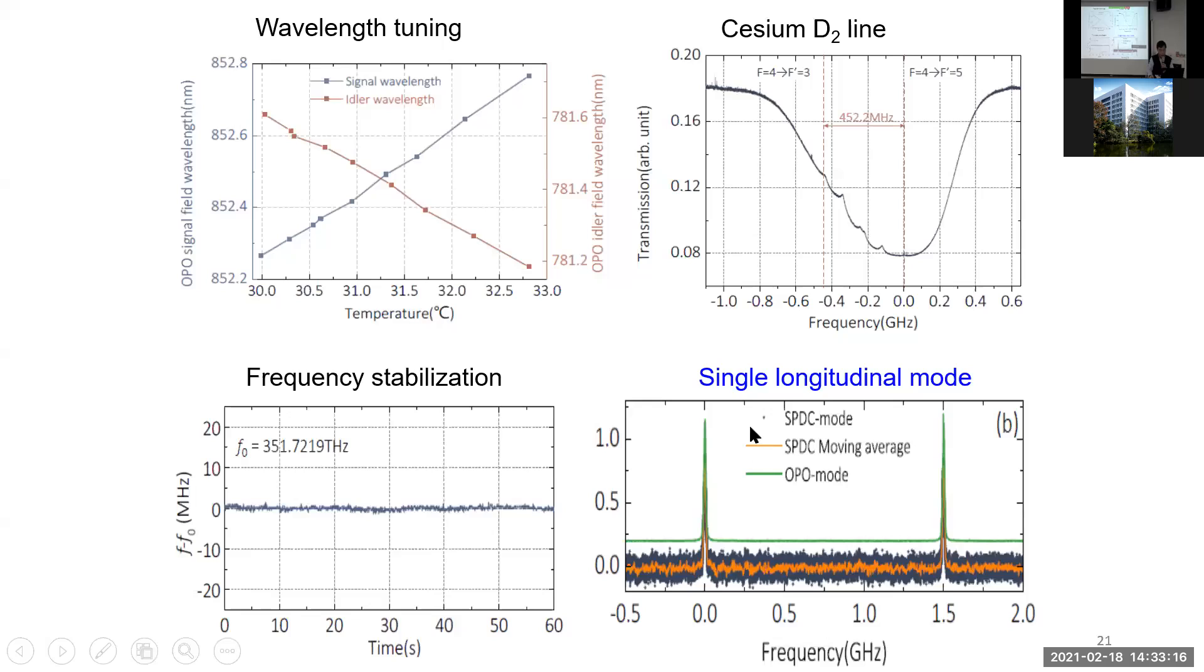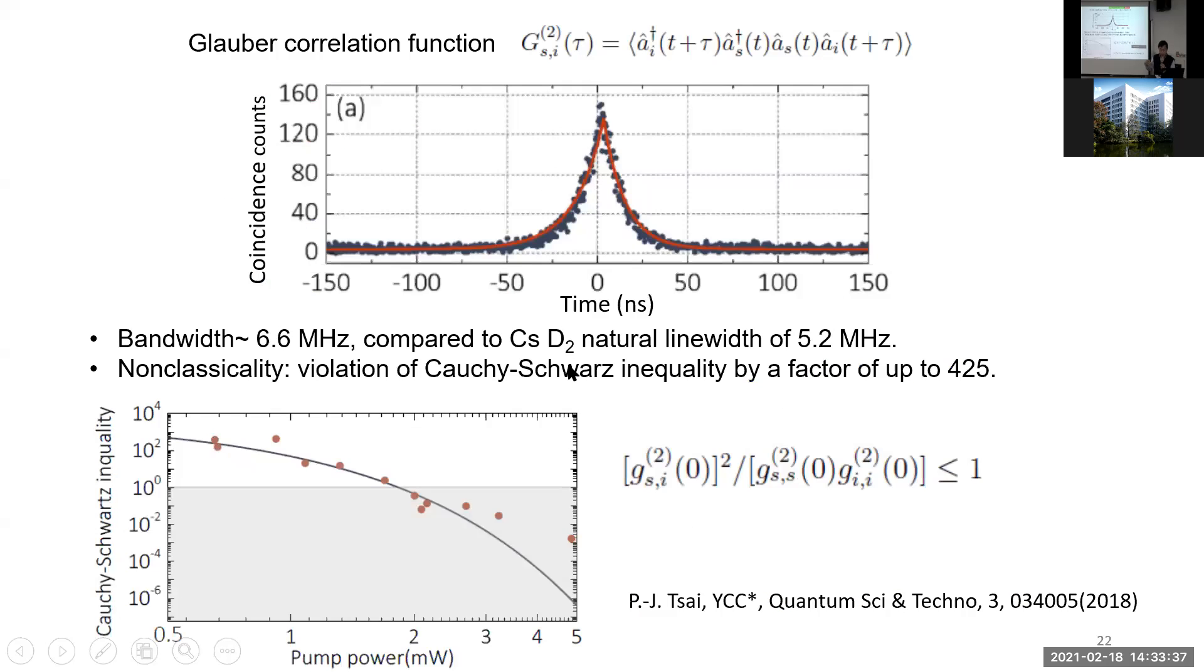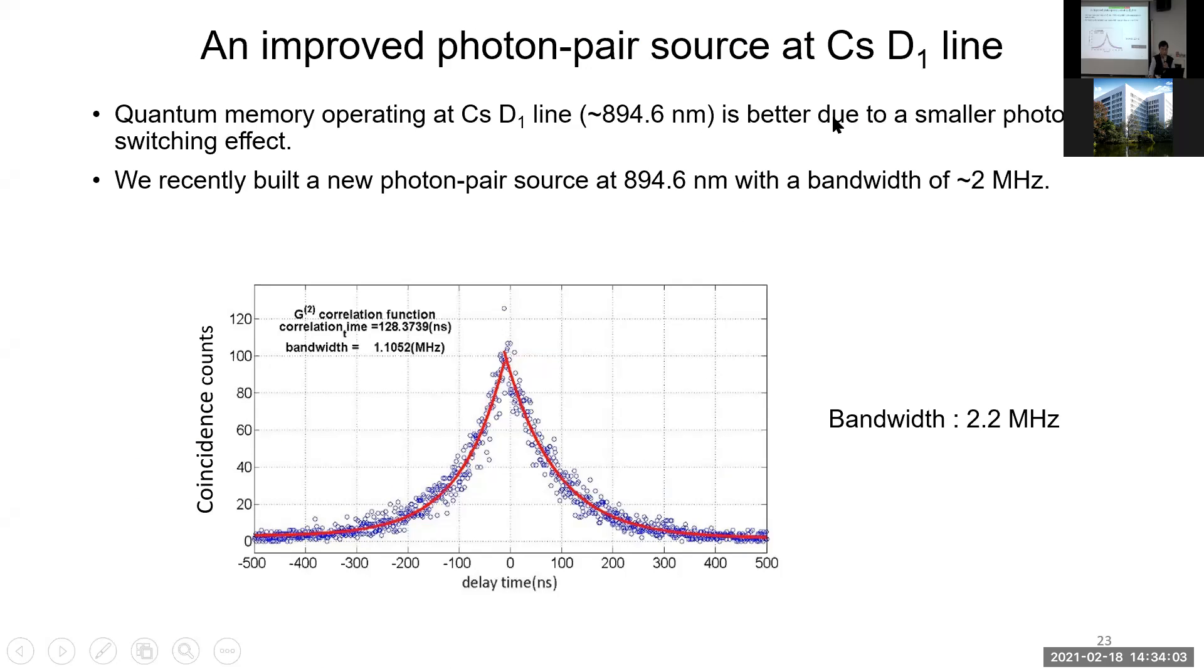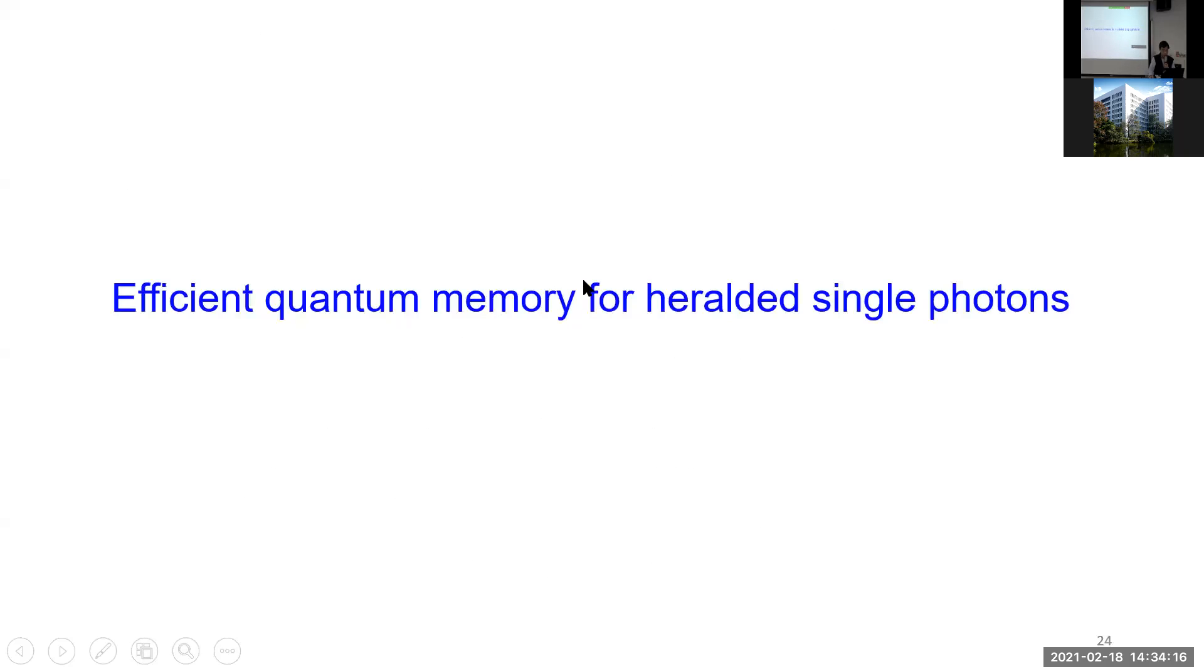We can actually tune its wavelengths to atomic transition and we can actually lock its frequency. Then we make sure it's a single longitudinal mode, because many photon pair sources are multi-mode and only a few percentage of the light is resonant with atomic transition. But for our source they are all in a single longitudinal mode. We check that its non-classical property is very good. It violated the Cauchy-Schwarz inequality at low pump power. The bandwidth was like 6.6 megahertz, still a little bit larger than the natural linewidth of cesium transition. Very recently we built another new photon source at the cesium D1 line, and its bandwidth is about 2.2 megahertz, which is already below the natural linewidth.